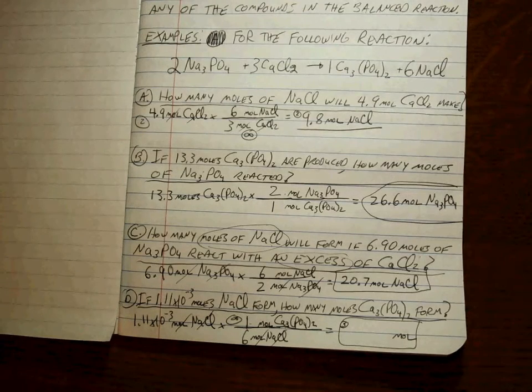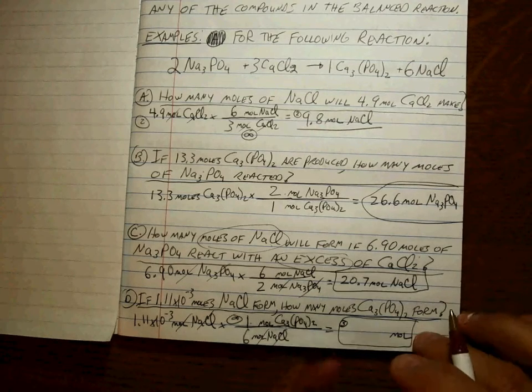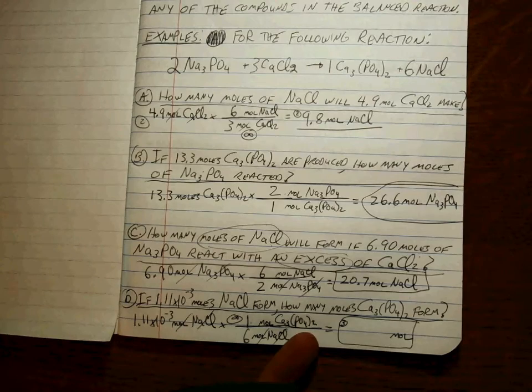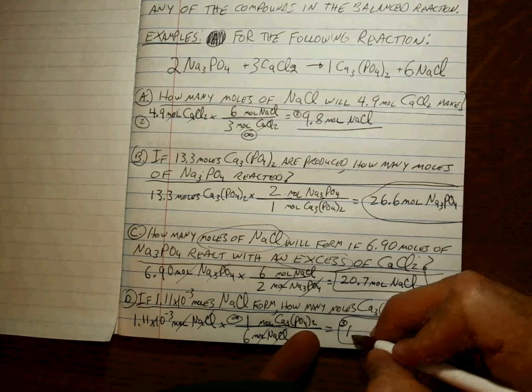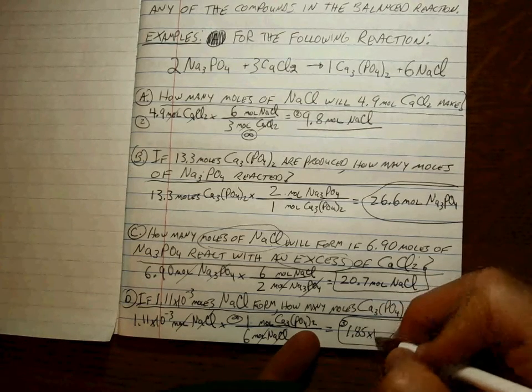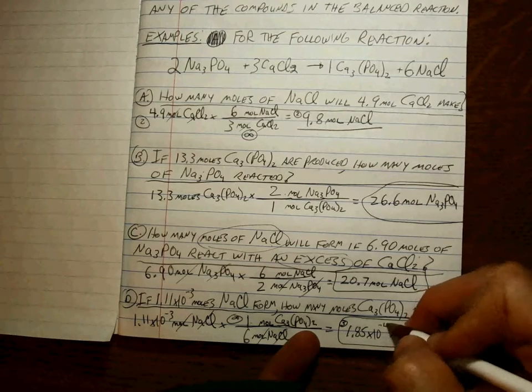And whatever 1.11 times 10 to the minus third divided by 6 is: 1.85 times 10 to the minus fourth moles.